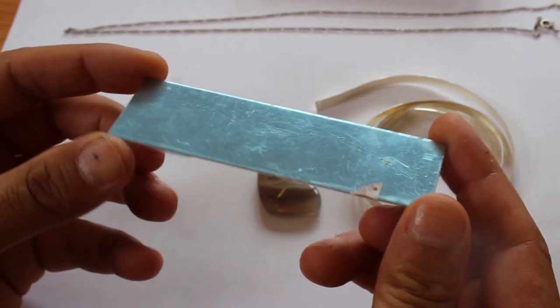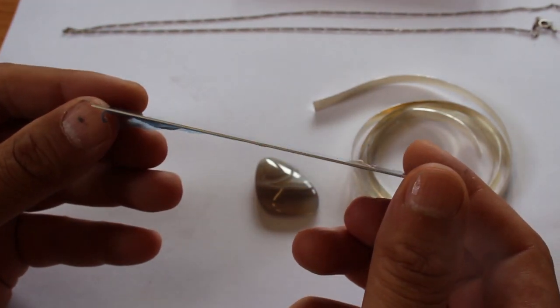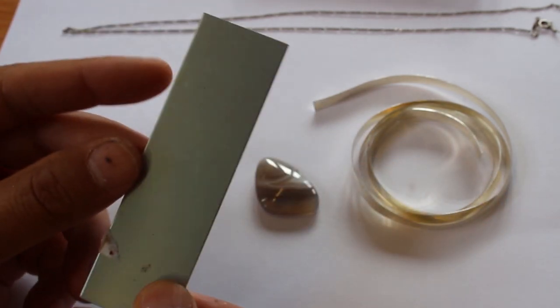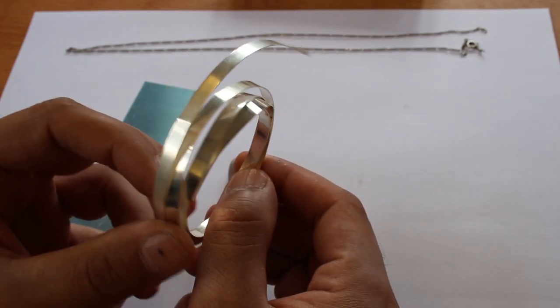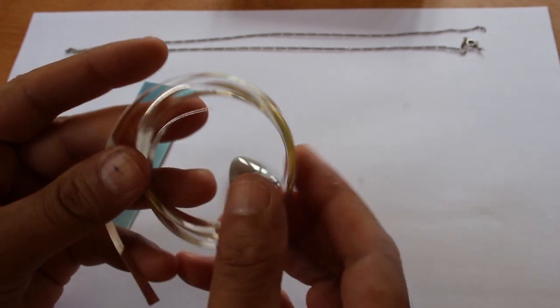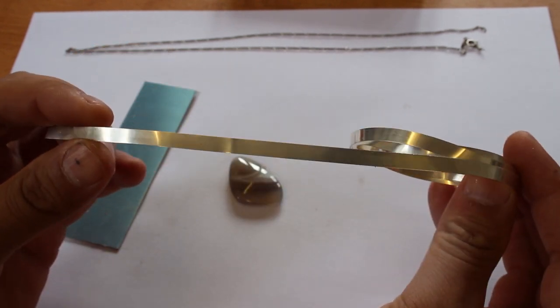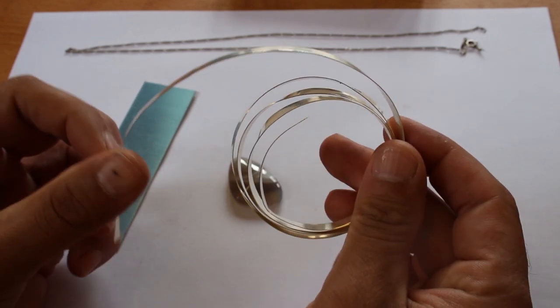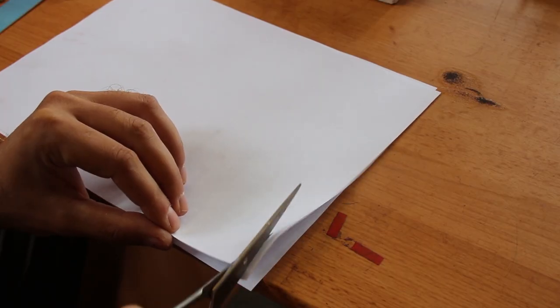For the back of the pendant I actually used sheet silver. This was 0.7 mil thick but you can use thicker if you like. And then finally to make the bezel setting I used this thin silver bezel wire which is super flexible and easy to use.